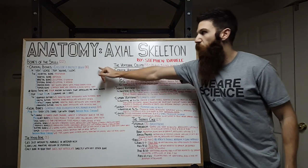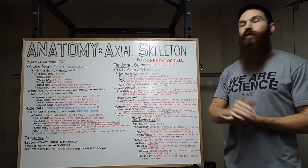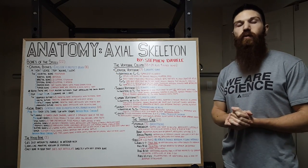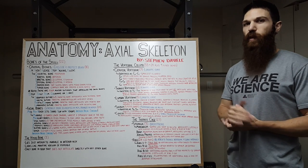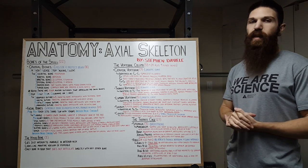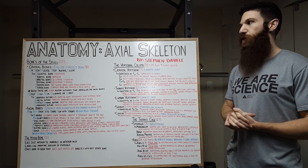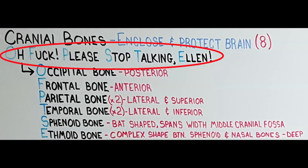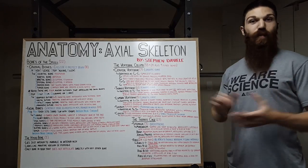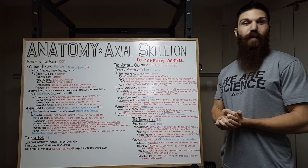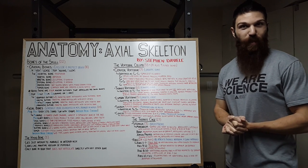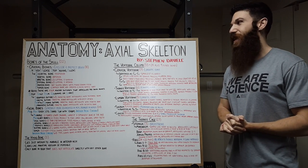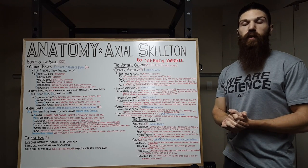We have our cranial bones. Our cranial bones are going to function to enclose and protect the brain. If you're having trouble remembering what the cranial bones are, I've come up with a mnemonic for you to remember. That is: Oh Fuck, Please Stop Talking Ellen. Now, before you start getting upset at me, I am not referencing Ellen DeGeneres — it's just I couldn't think of another name that starts with the letter E. In total, we have eight cranial bones.